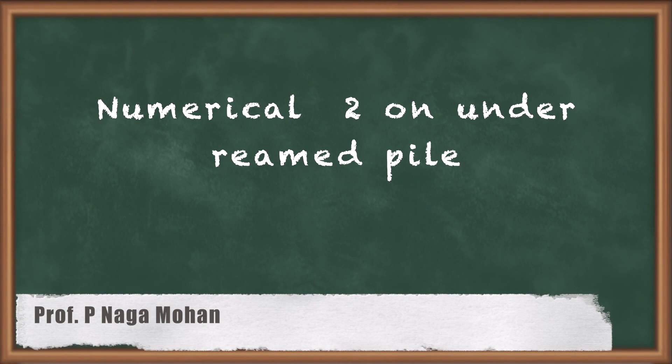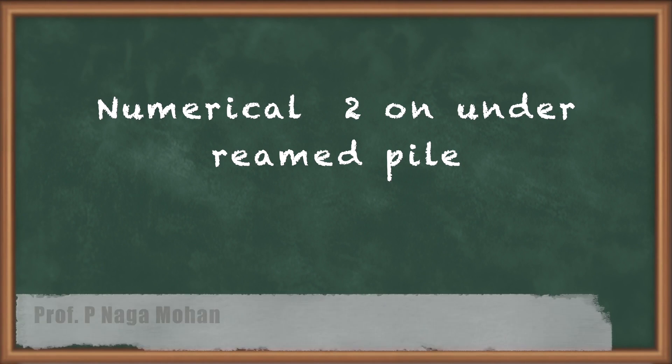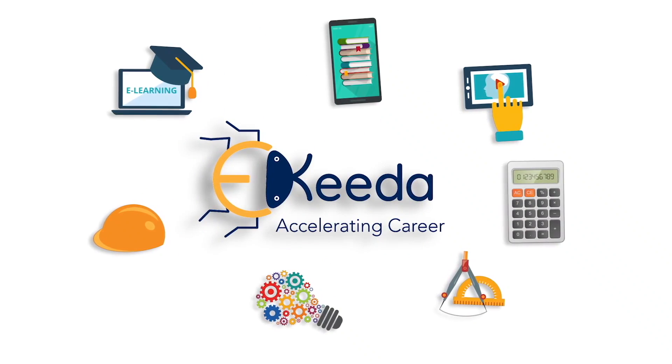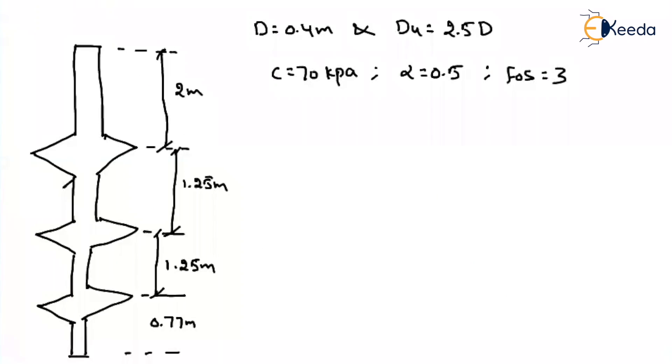Hello friends, let us solve another problem based on Under-Rimmed Pile. Suppose in the previous problem we solved only if we are having one extension area, one bulb. So here how many bulbs are we having? That means we can call it as a Multi-Under-Rimmed Pile.